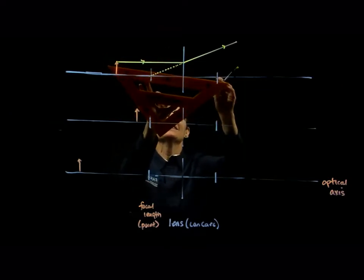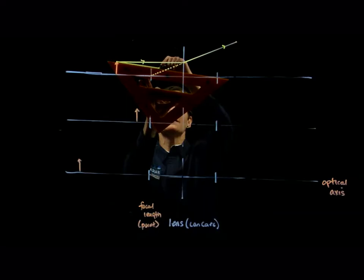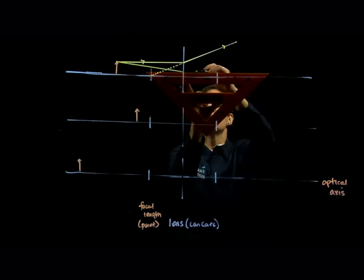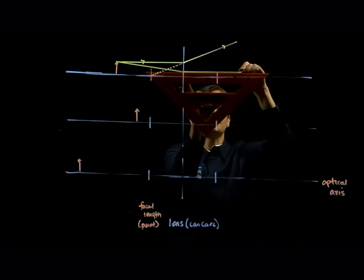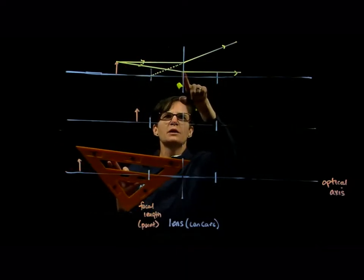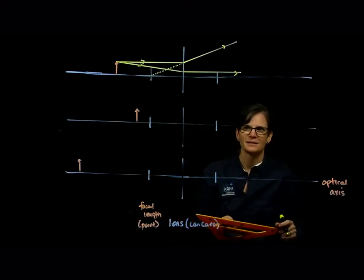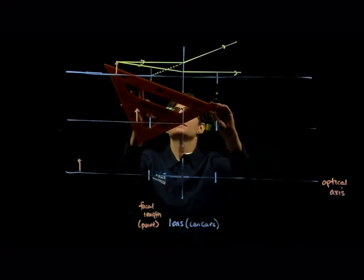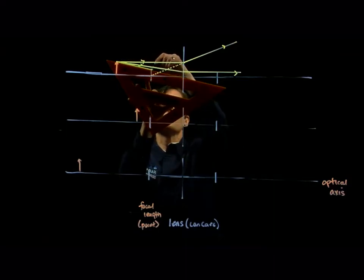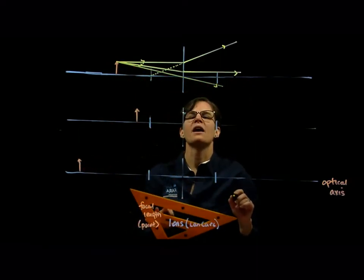Rays of light that are in line with the far focal point will refract parallel to the optical axis. So this ray of light is in line with the far focal point; when it hits the lens it's going to refract parallel to the optical axis. And as with our other lens, rays of light that are in line with the center of the lens remain unrefracted.